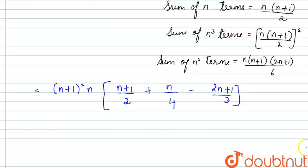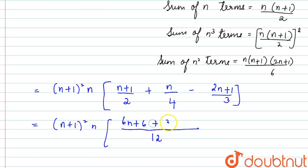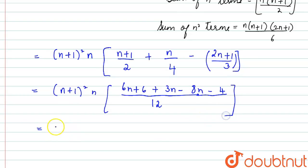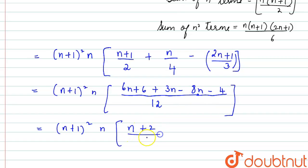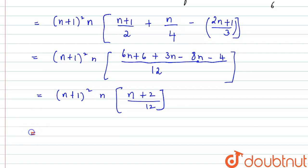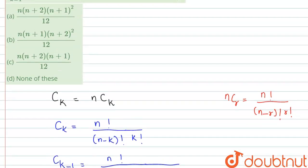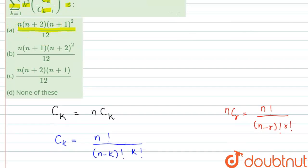Taking LCM = 12 for the bracketed terms: 6(n+1) + 3n - 4(2n+1) = 6n + 6 + 3n - 8n - 4 = n + 2. So the expression equals n·(n+1)²·(n+2)/12. This matches Option A: n(n+1)²(n+2)/12, which is the correct answer.